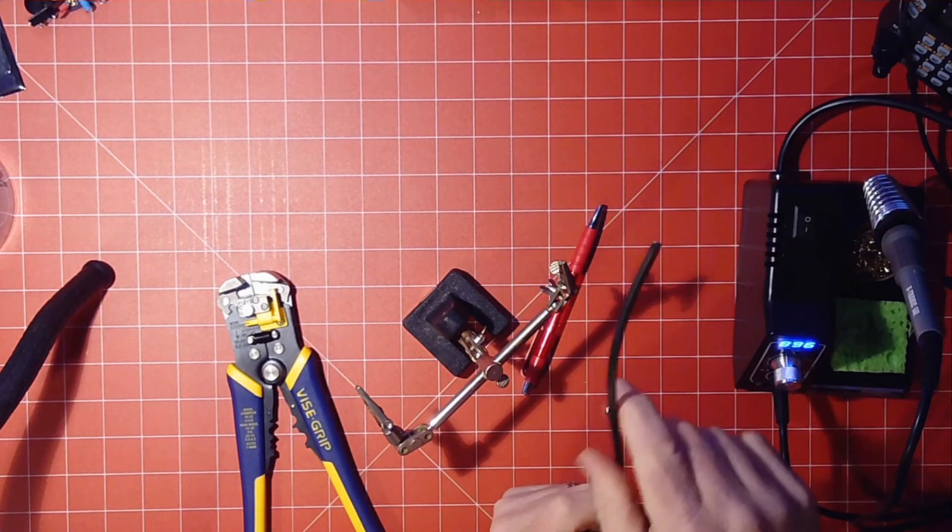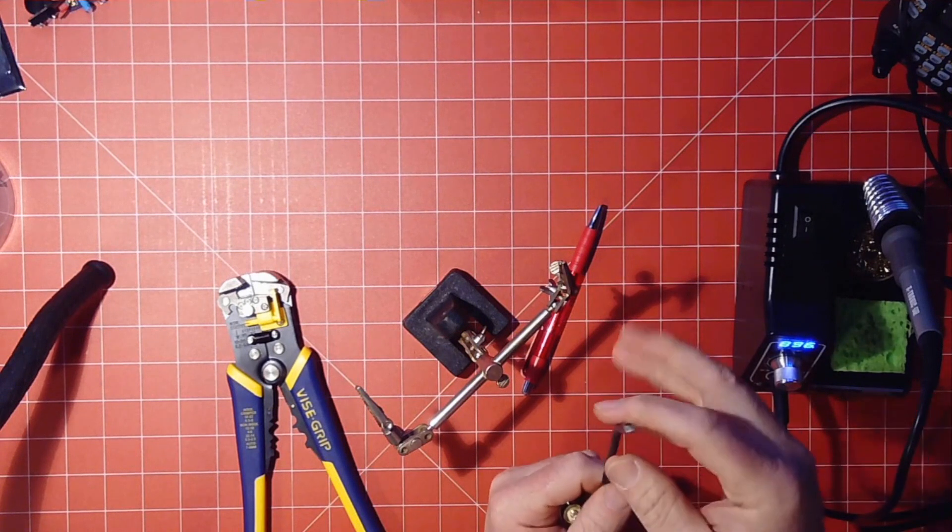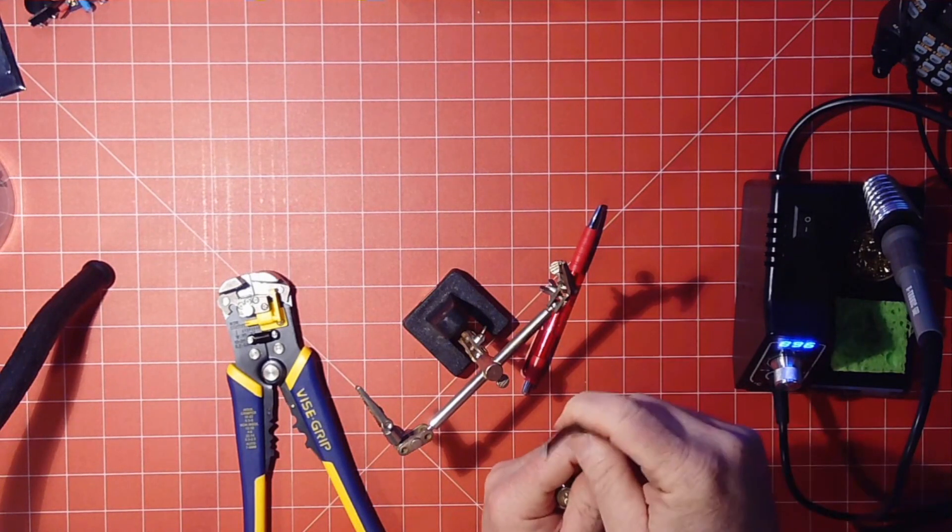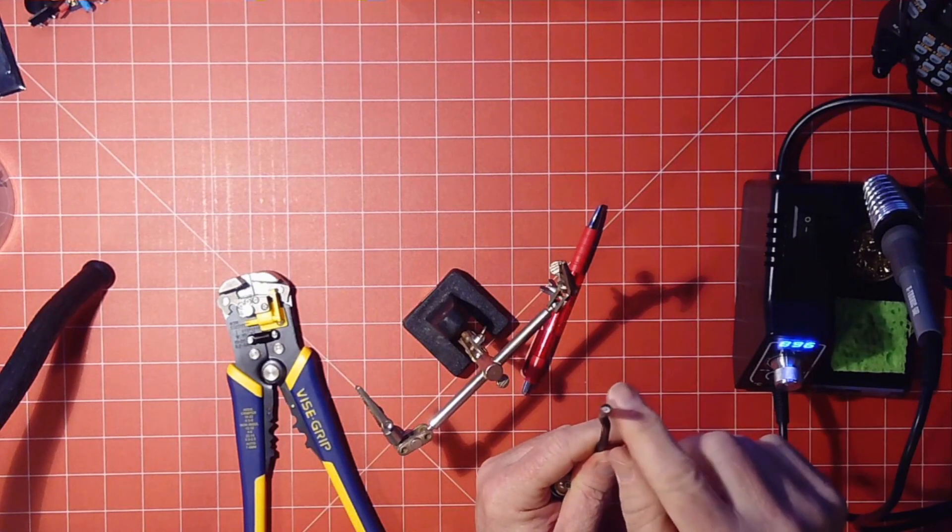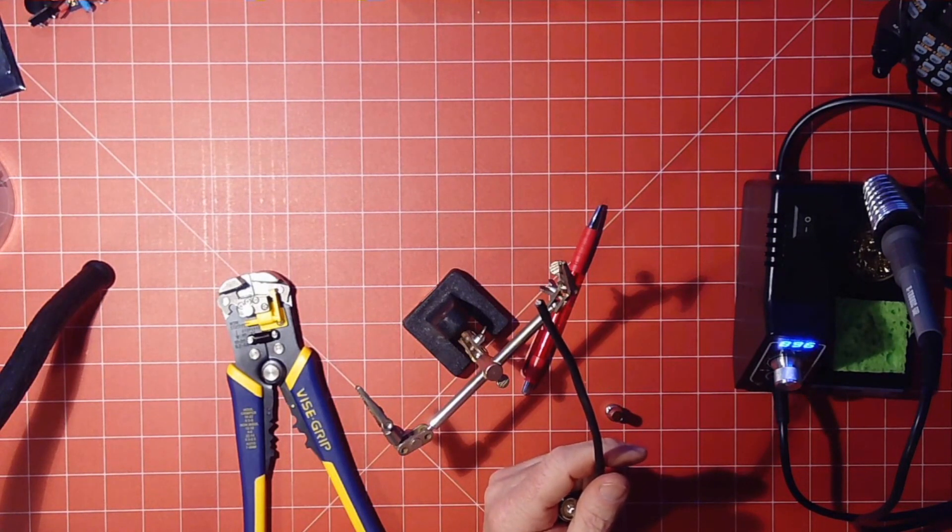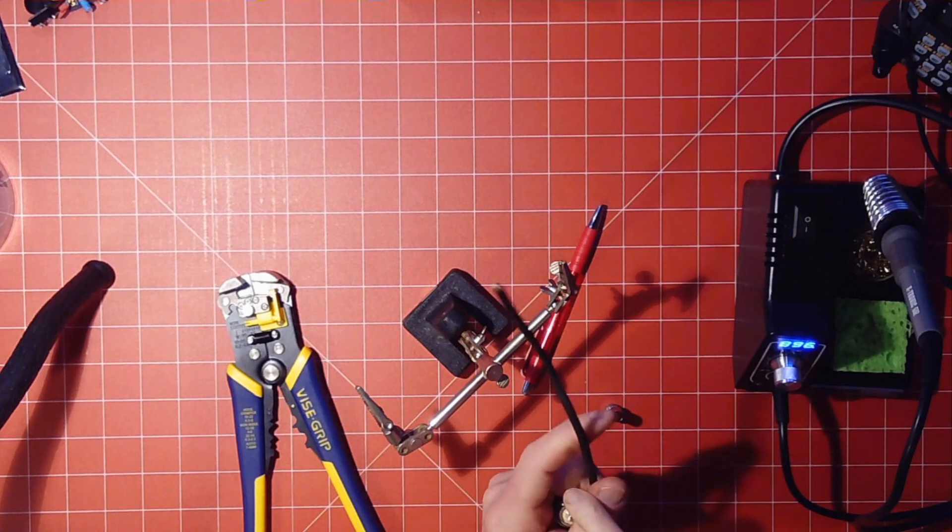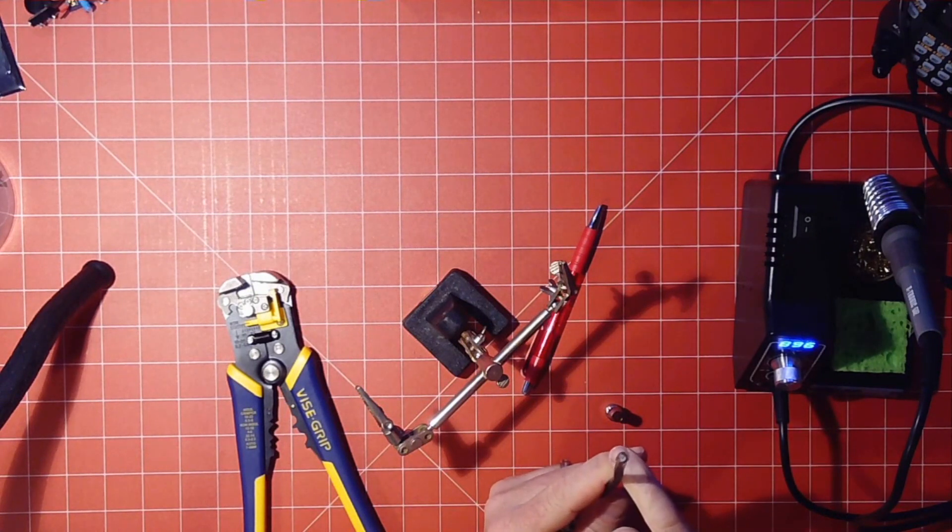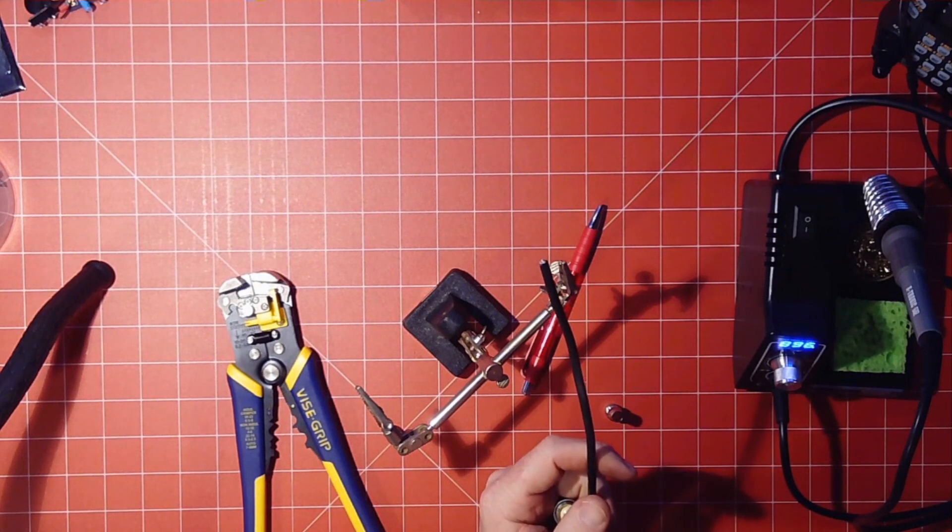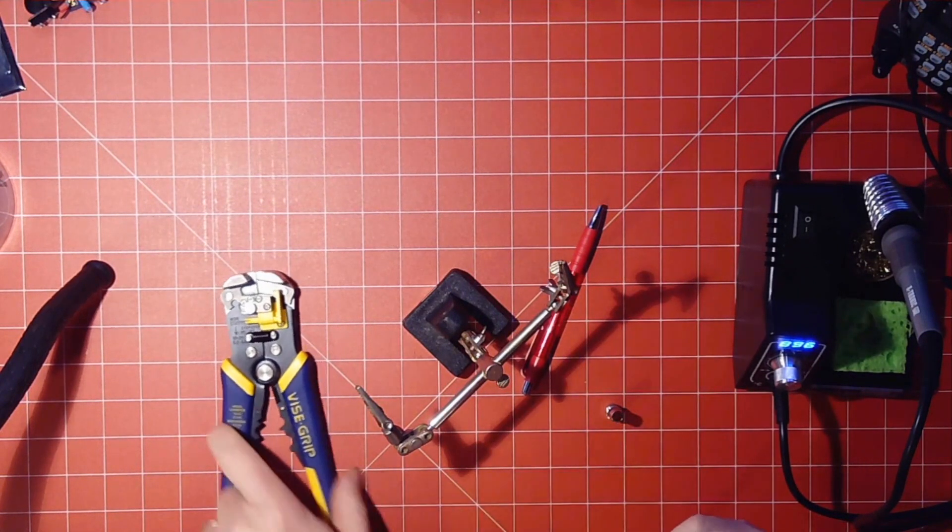So what we're going to do is, I actually cut this off of a magnetic mount antenna, which I can already tell you, this is not high quality coax. But the reality is if you buy some little mag mount antenna somewhere, you're probably not going to have the highest quality coax. So I'm going to show you how to do it with this. And the principle is the same if you have better coax.